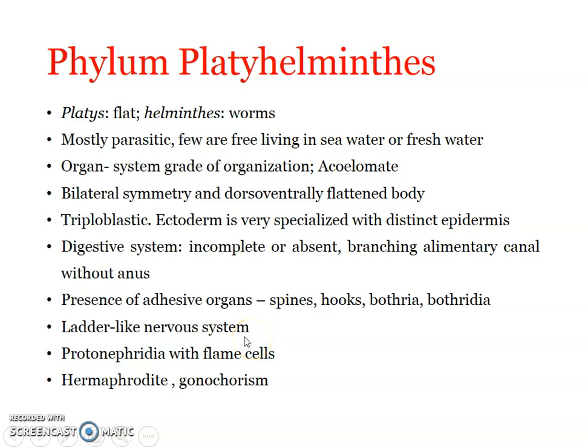They are mostly monoecious, meaning they are hermaphrodites, with both male and female reproductive structures present in the same organism. Fertilization is internal — either cross-fertilization or self-fertilization. Development is direct or indirect, usually indirect in endoparasites with a complicated life cycle involving many hosts. Free-living, commensal, and parasitic forms are all found.